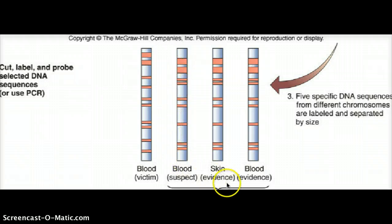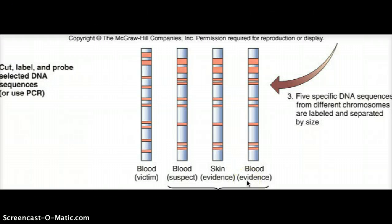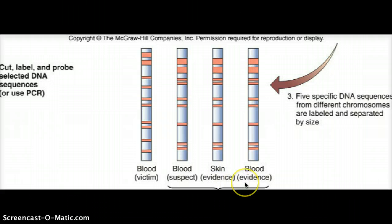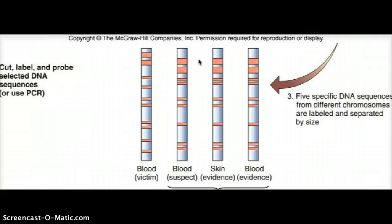Now we've got some evidence — some skin and some blood. Maybe we're trying to place the suspect at the scene, or maybe this was on the victim. We need to figure out: is this the victim's skin cells and blood cells, or is this the suspect's? So we're going to get the DNA into fragments and run it on the agarose gel.